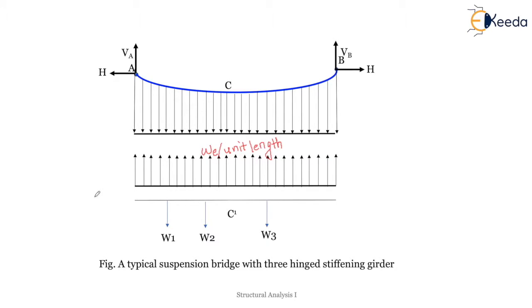This diagram is a free body diagram of the cable and girder together. When we consider the moment at the central hinge of the girder — that is, moment about point C-dash — the UDL exerted by the suspenders can be calculated. We should remember that due to this UDL alone, there is a bending moment at any section.